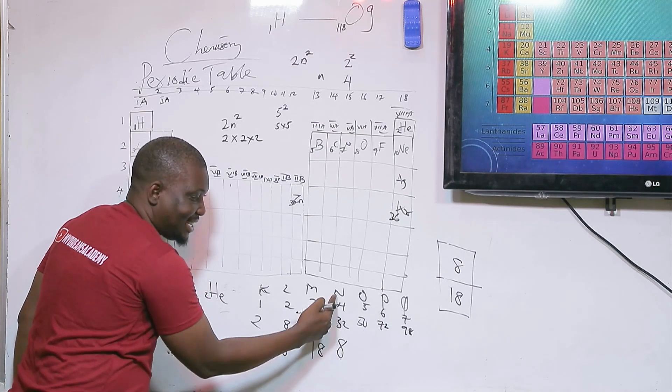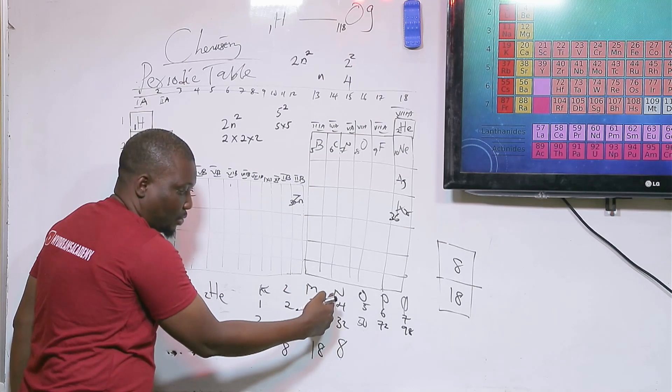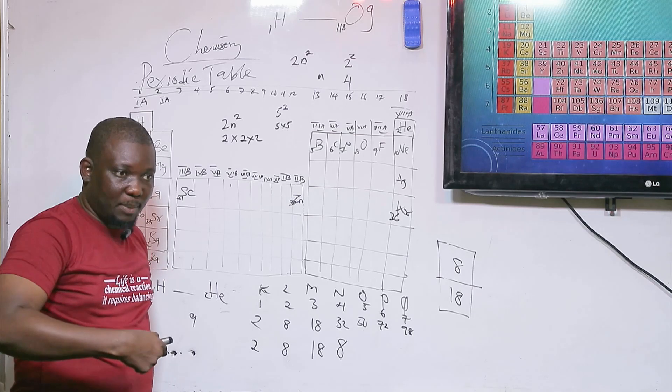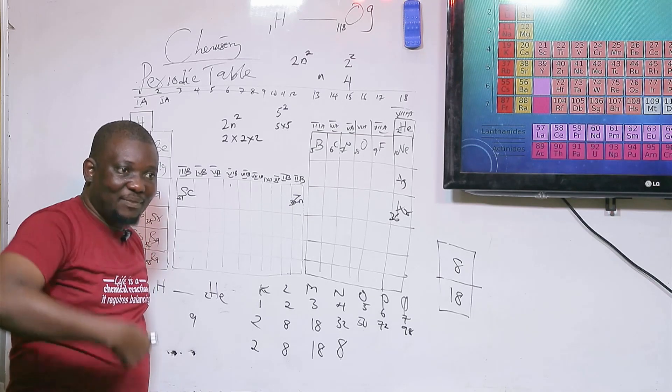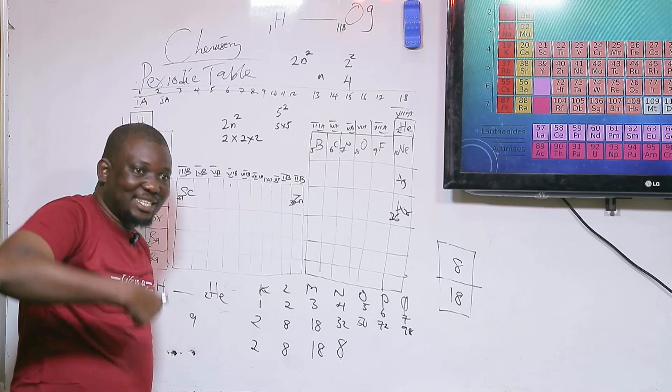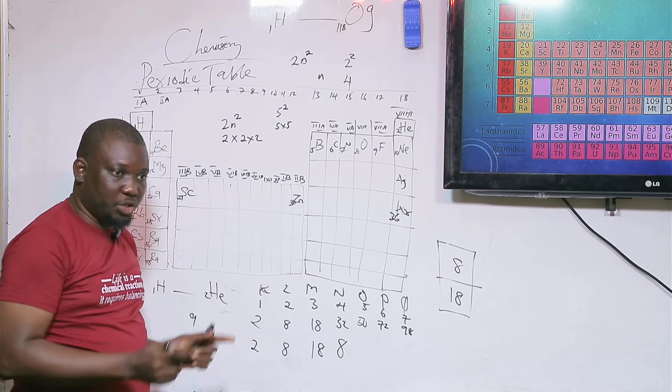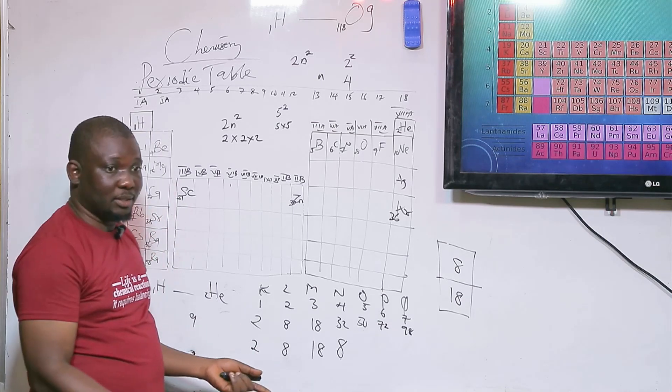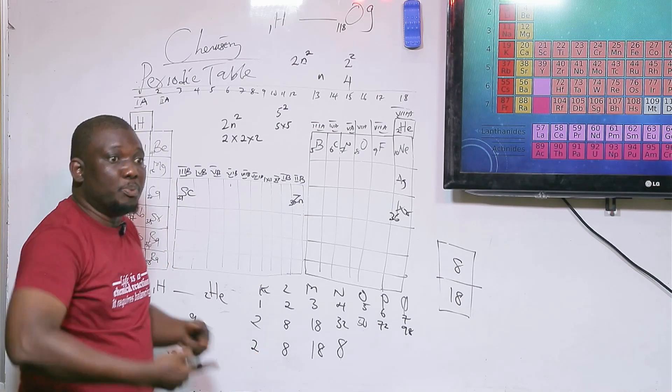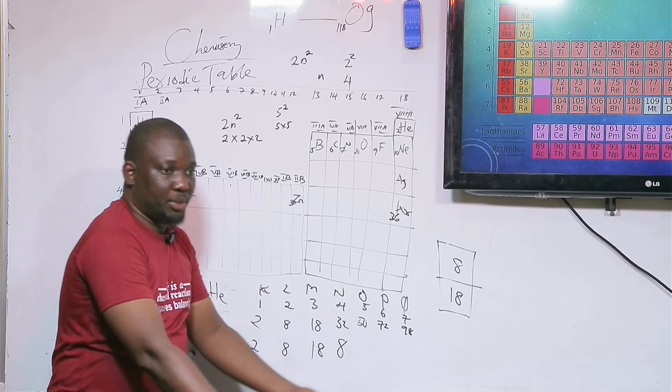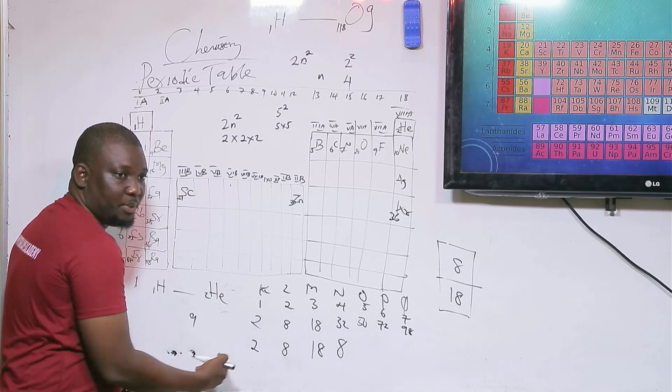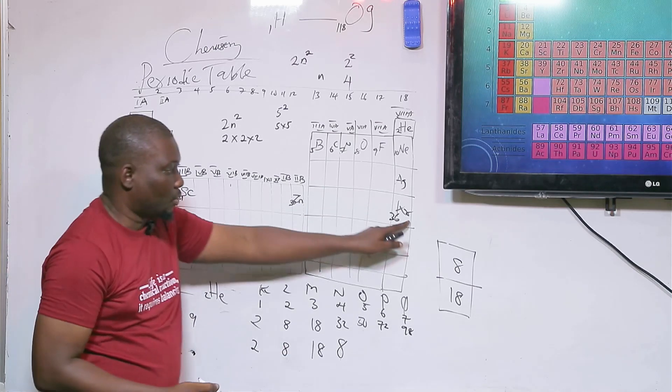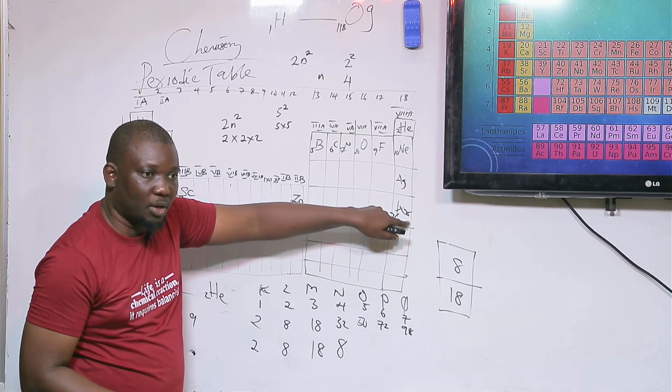For the fact that this particular element achieves what we call octet level or octet state, meaning it has its electronic configuration completely filled, this element will not be in group 8. We refer to them as group 0 elements. How many atomic shells are there? 4. That is why krypton is in period 4.